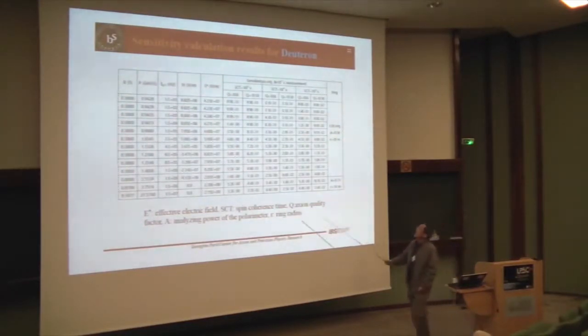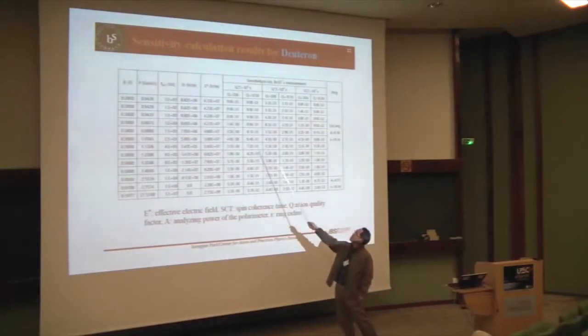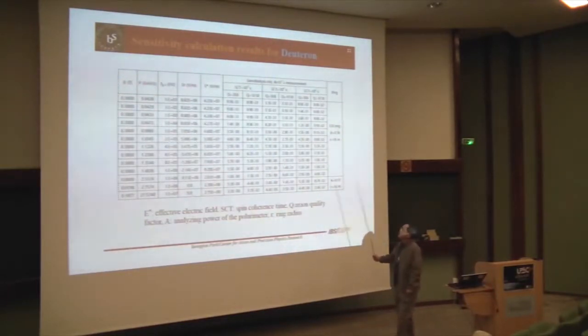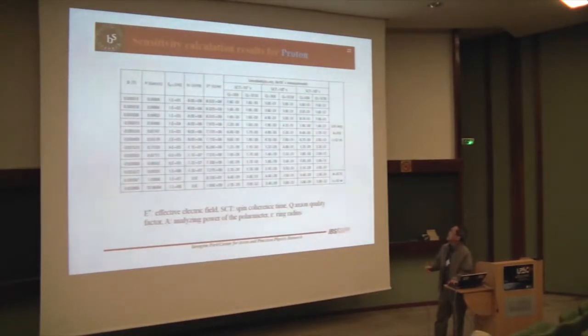We assumed, axion quality factor, three times 10 to the six. Some models, some people are saying, it could be very large, 10 to the 10. So, I put both calculations here. If that's true, then you can have, 10 to the minus 32, e-centimeters, sensitivity. This is what, neutron case. This is, proton case. Proton is a little bit worse, than deuteron, because, because of the B field.